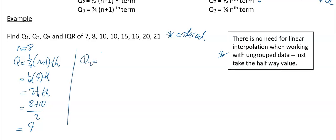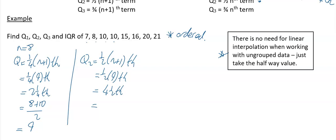Q2 is (1/2) × (n+1) = (1/2) × 9 = 4.5, so the 4.5th value — halfway between the 4th and 5th values. The 4th value is 10 and the 5th value is 15, so Q2 = (10 + 15) ÷ 2 = 12.5.